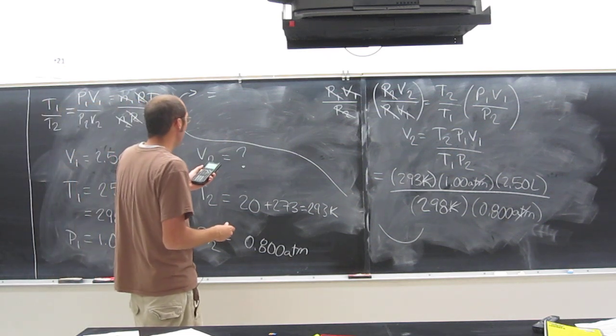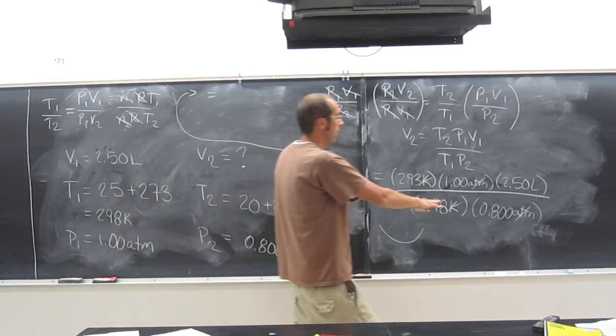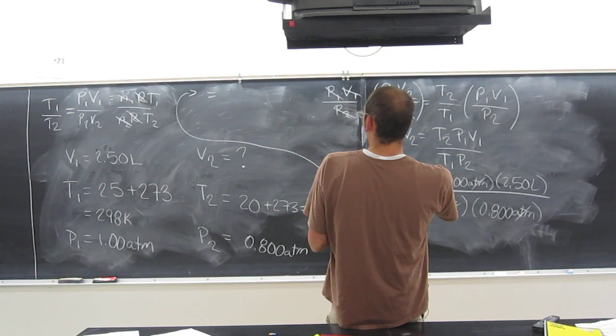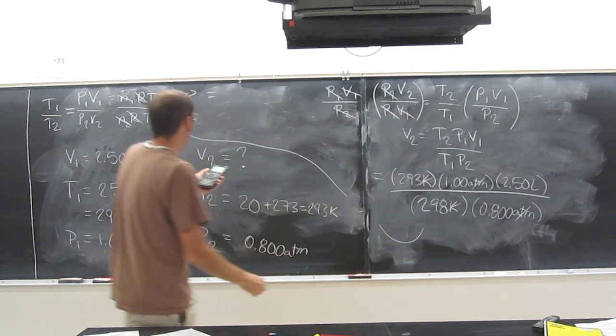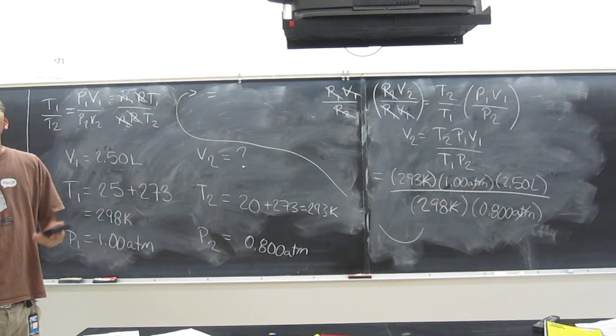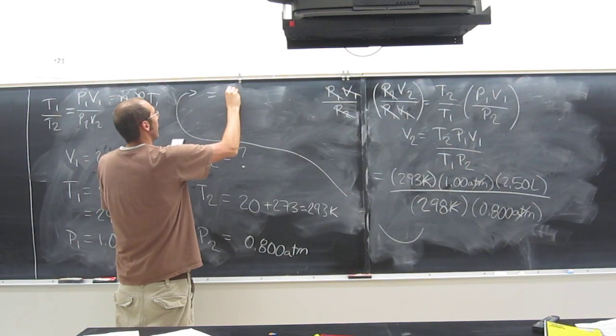If we had a balloon that did all of this stuff, the temperature decreased, but the pressure also decreased. So the volume of the balloon is actually going to get bigger. It's a function of both of those things happening. The temperature decreasing is going to make your balloon smaller, but the pressure decreasing is going to make it bigger. So the pressure decrease outweighs the temperature decrease. And what I got, hopefully everybody else got the same answer. What did you guys get? 3.07.